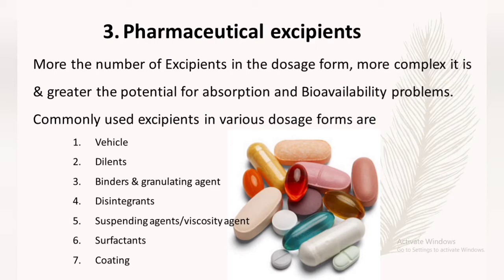The third dosage form factor is pharmaceutical excipients. More the number of excipients in the dosage form, the more complex it is and the greater the potential for absorption and bioavailability problems. Pharmaceutical excipients are chemicals used to give physical structure or form to a dosage form. Examples include vehicles, diluents, binders and granulating agents, disintegrants, suspending agents, surfactants, and coating agents.